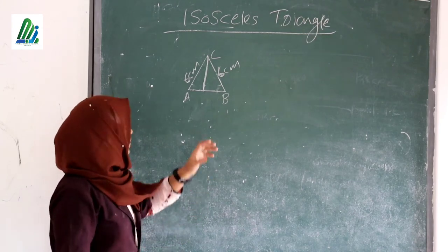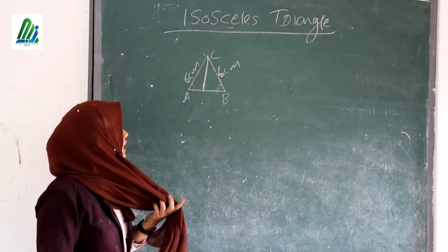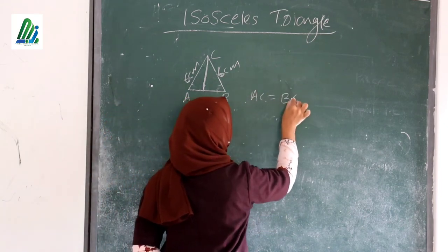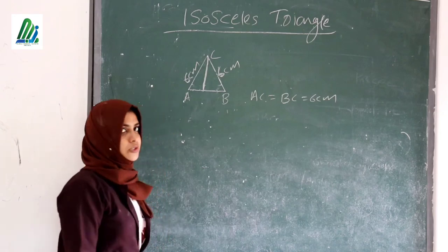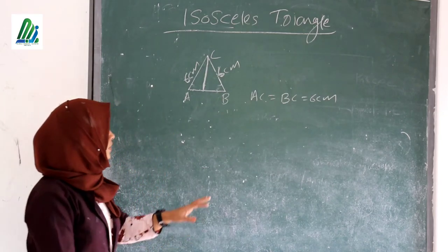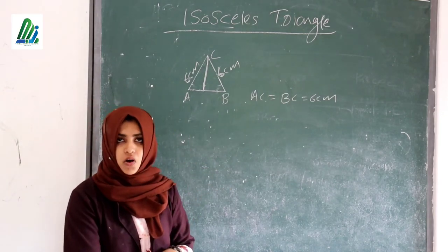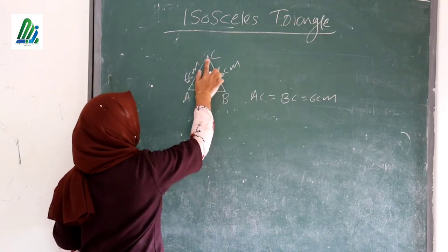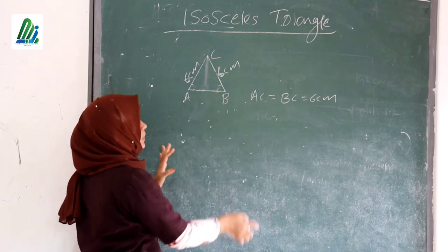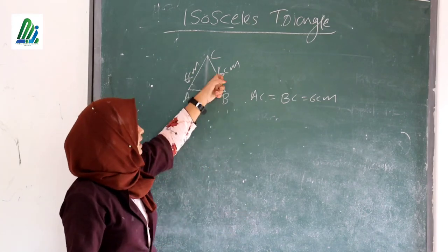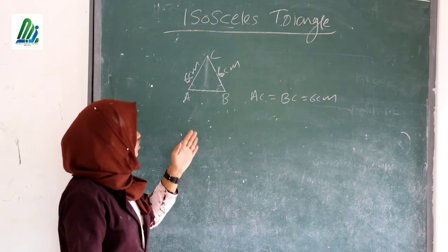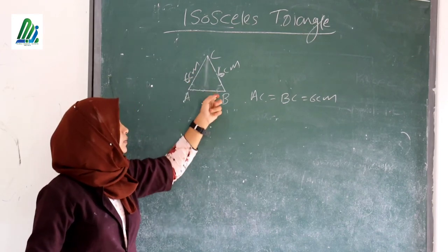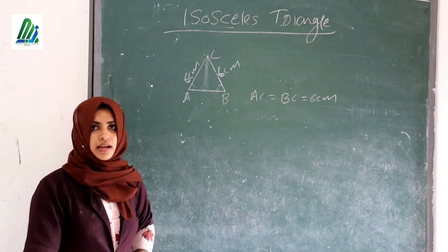In triangle ABC, the sides AC and BC are each equal to 6cm. An isosceles triangle is defined as: if two sides of a triangle are equal, then the triangle is called an isosceles triangle. Here, since sides AC and BC are equal, it is an isosceles triangle.